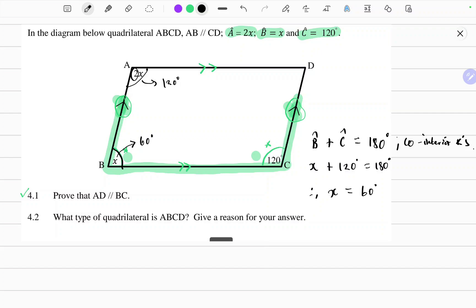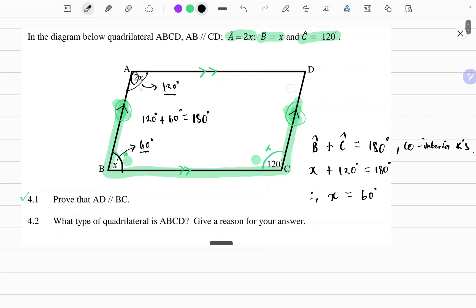And look what we have now. We have now that the sum of the two, this angle and that angle, 120 degrees plus 60 gives us 180 degrees. So therefore, we can say that these two are co-interior and therefore AD is parallel to BC.